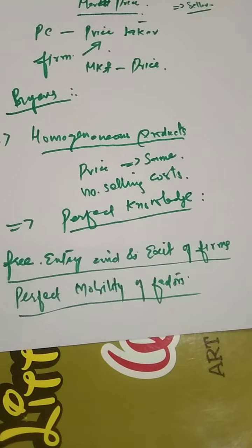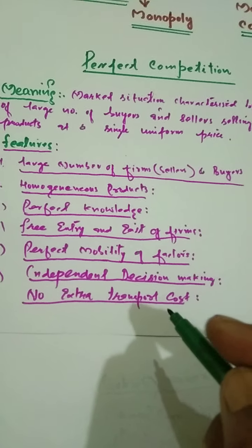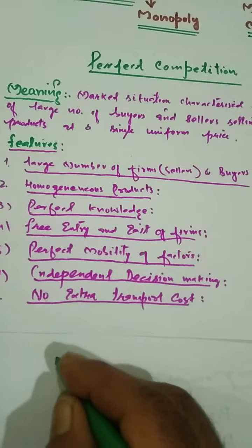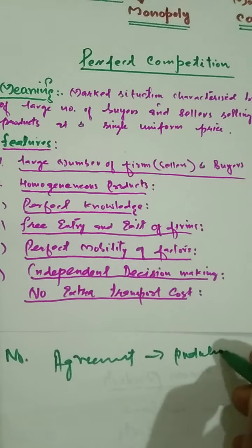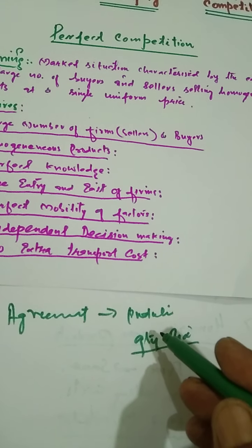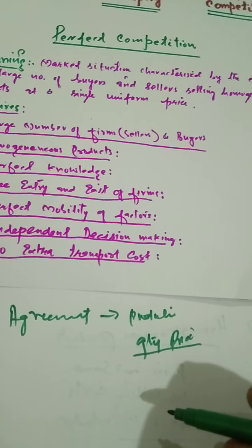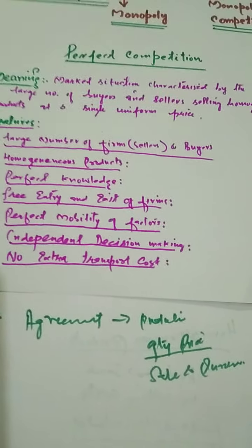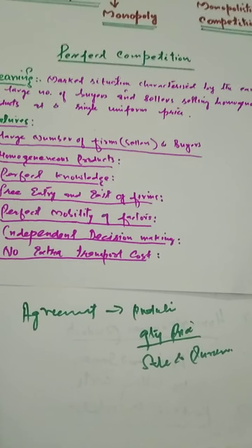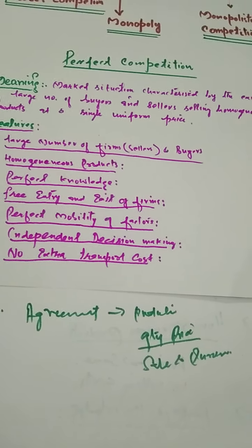Another important feature is independent decision-making and freedom from checks. In perfect competition, there is no agreement between sellers regarding production quantity or price, nor are there any restrictions regarding sale and purchase. The firms are independent with regard to decision-making and are free from checks.